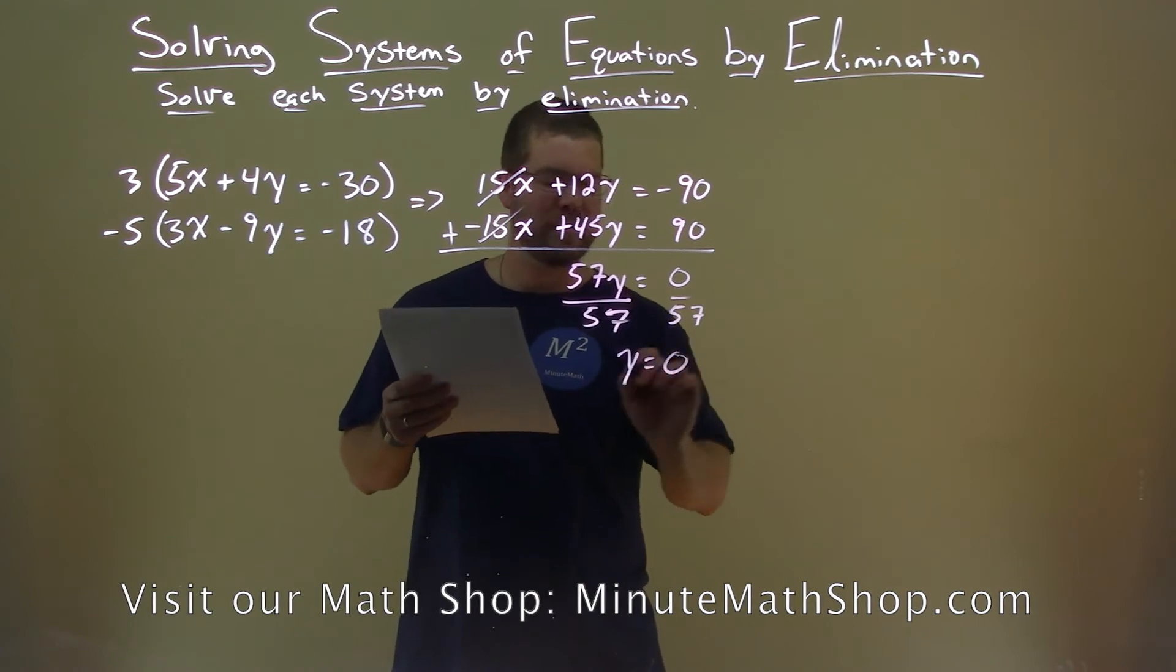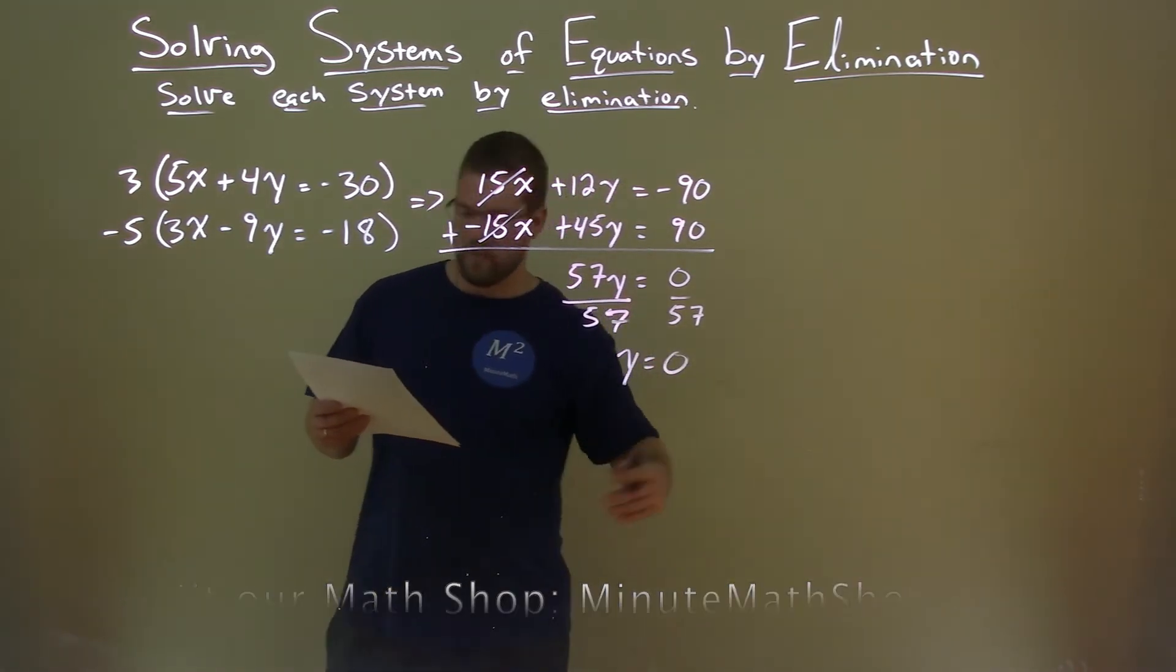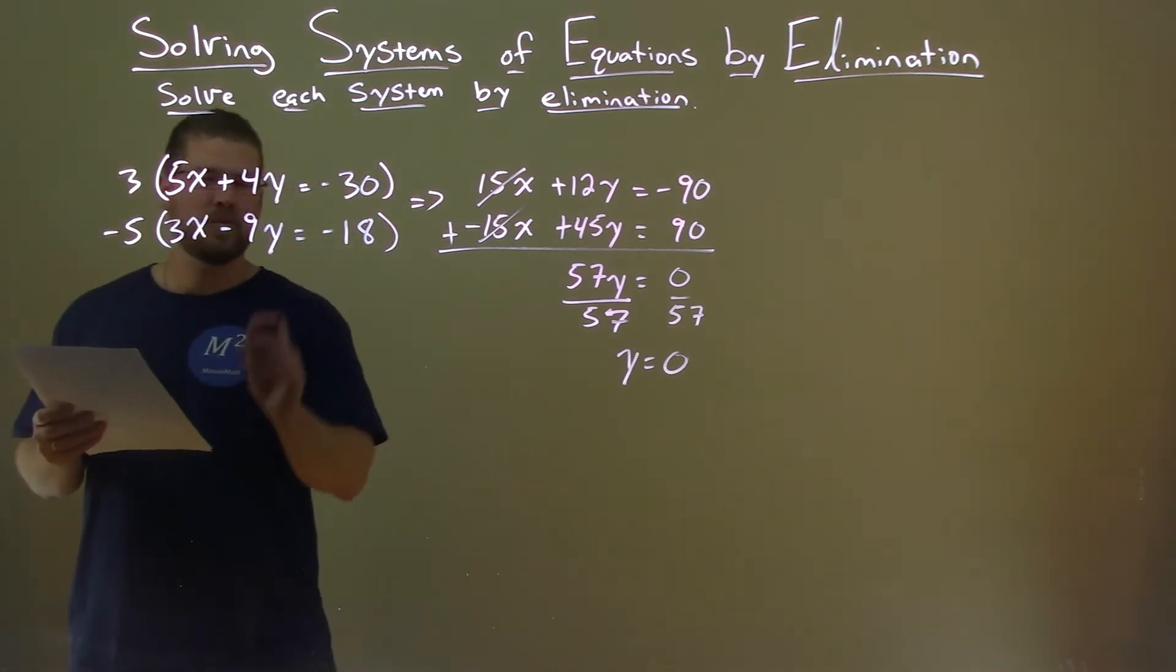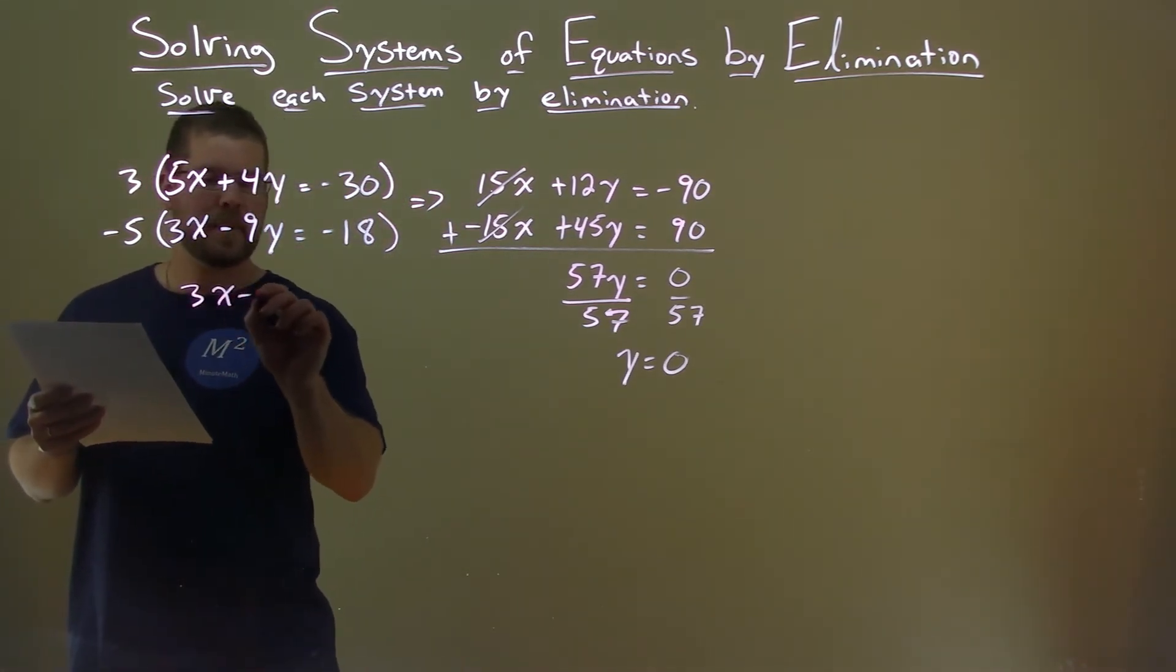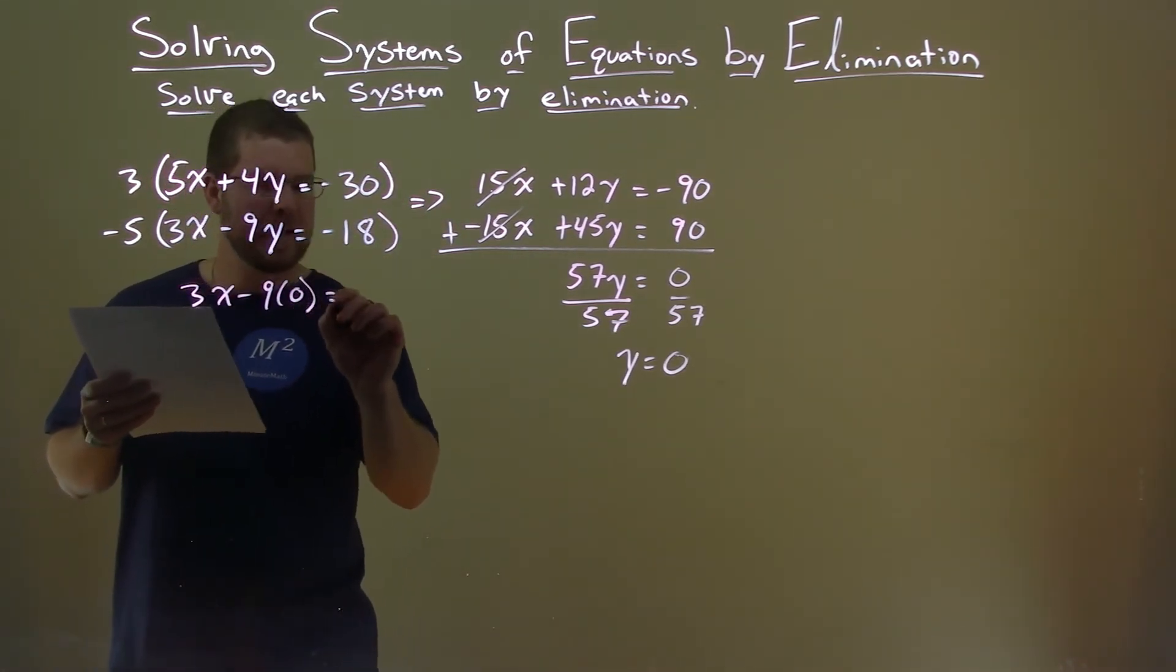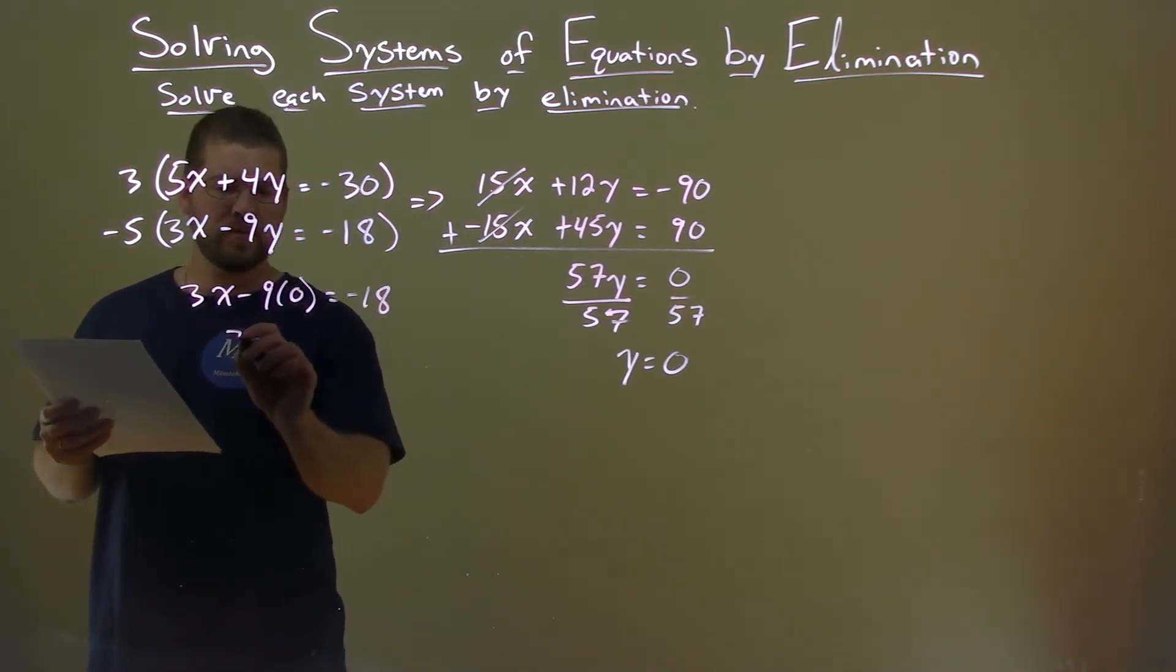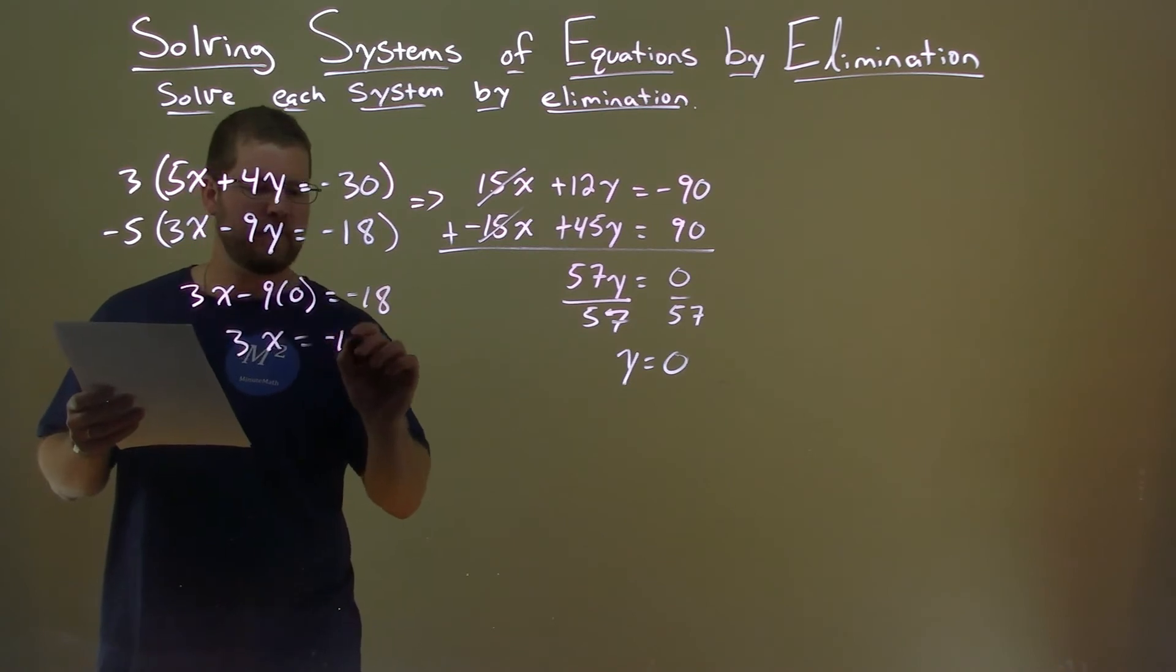But y is just 0. We take that information and plug it into one of our equations and solve for x. Let's choose the second one. 3x minus 9 times 0 equals negative 18. 9 times 0 is just 0. So we're left with 3x equals negative 18.